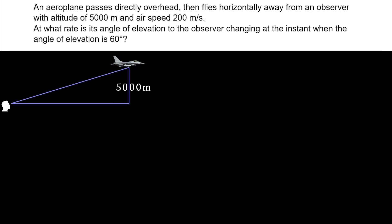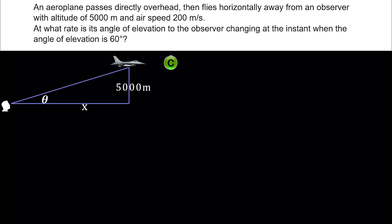The airplane is flying horizontally at an altitude of 5000 meters. Let's call the horizontal distance x, and the angle of elevation is theta. Let's find the first of the four components we learned earlier, the condition in the problem.